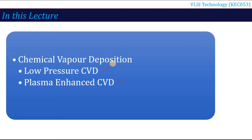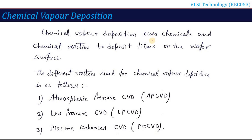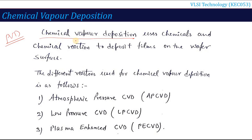Chemical vapor deposition uses chemicals and chemical reactions to deposit film on the wafer surface. When we talked about physical vapor deposition in PVD, physically we heat the material so that it converts into vapor form and then it condenses and deposits on the surface. In chemical vapor deposition, we use chemicals and chemical reactions so that our source material deposits on the substrate.